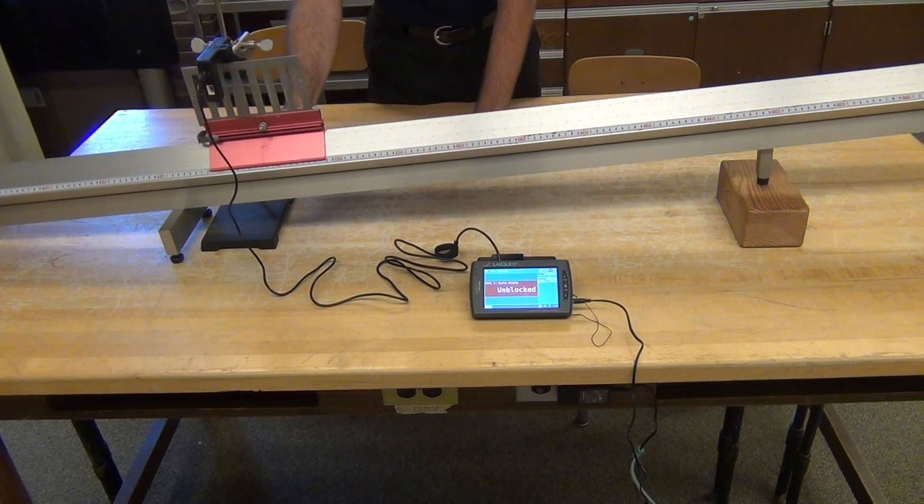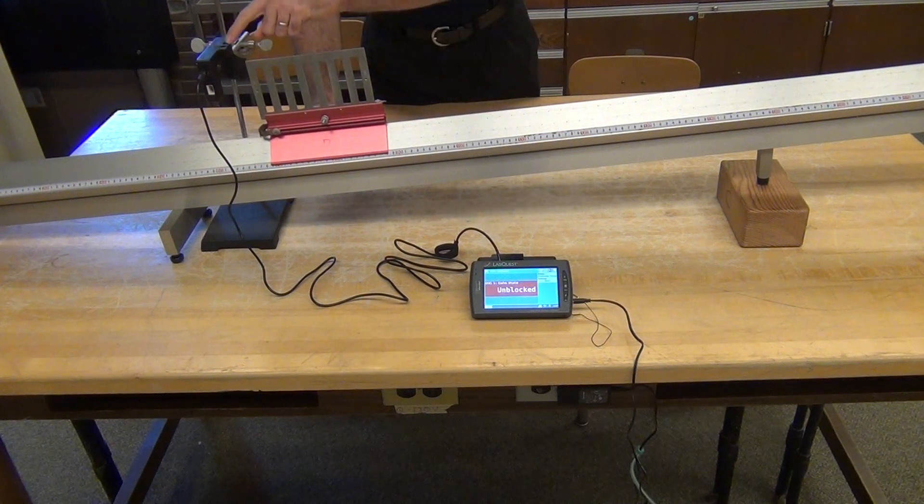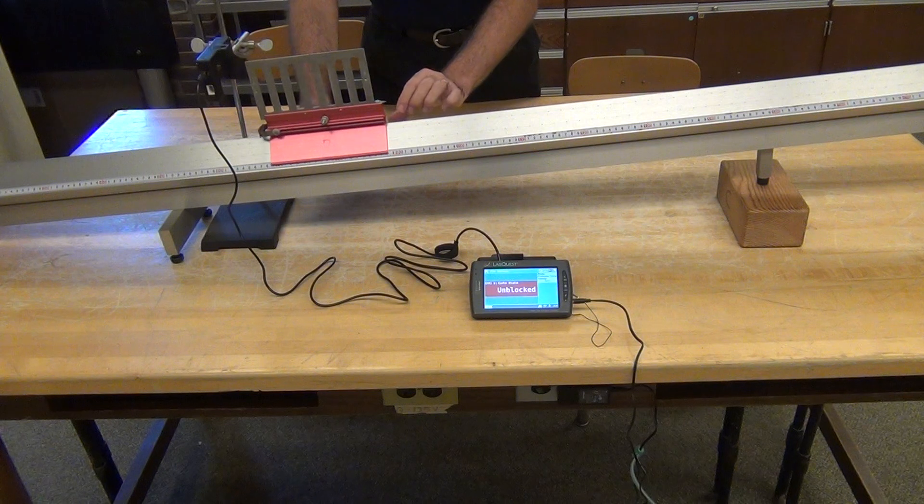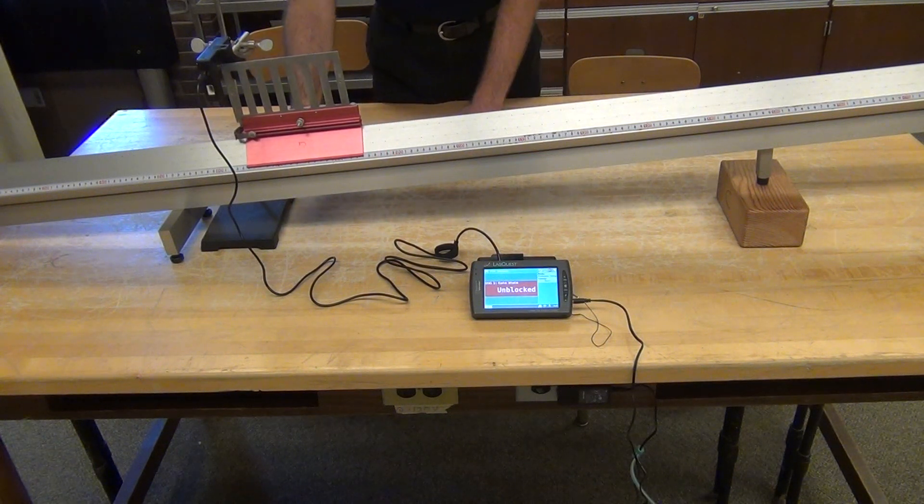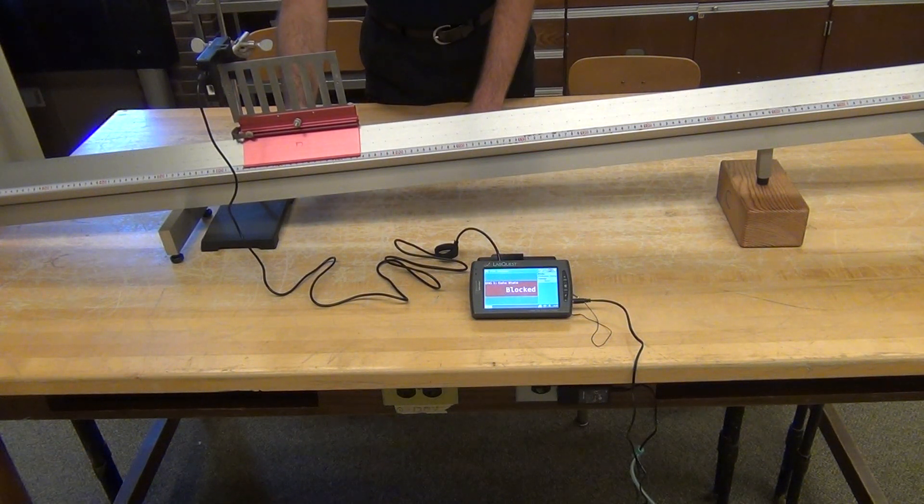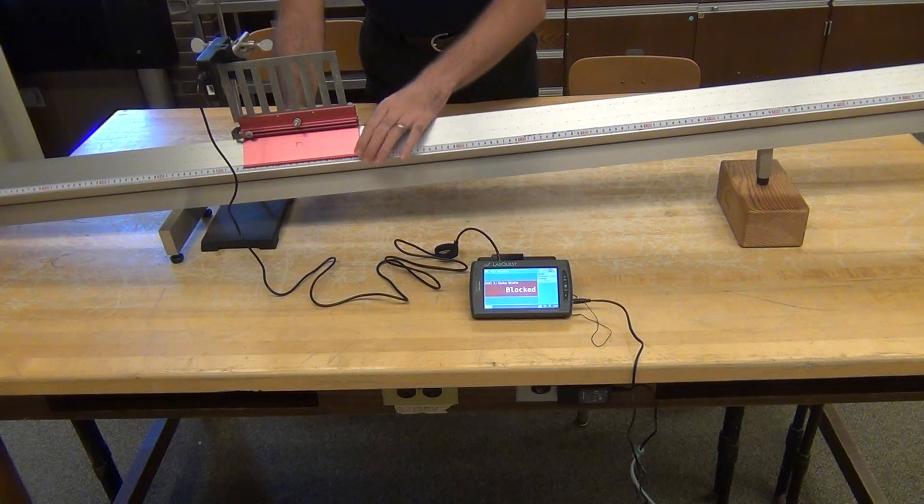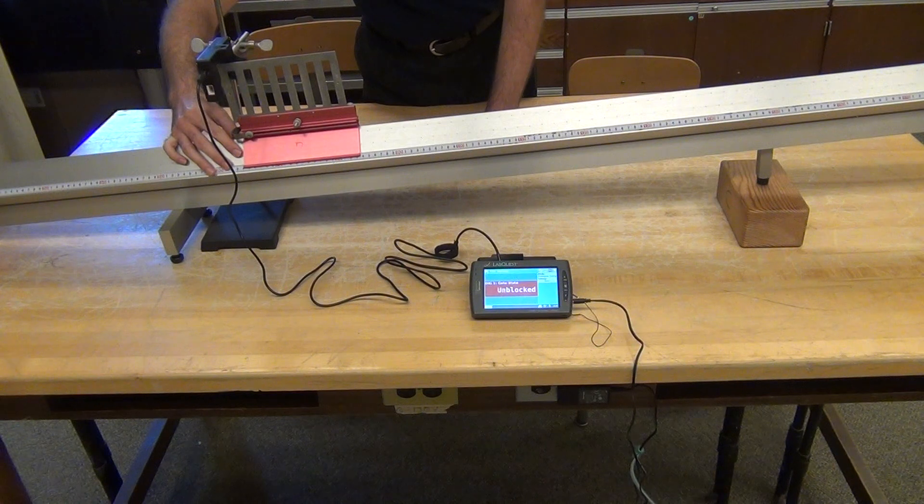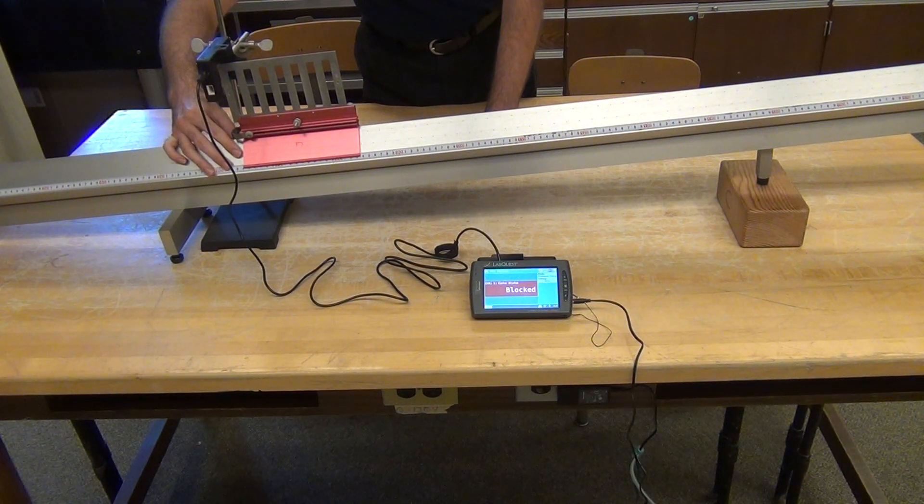I make sure that my glider breaks the beam and does not run into the Photogate. Now I want to measure the position of the Photogate, the relative position, and so I bring the glider in, holding it at the front edge until it just barely breaks the beam of the Photogate.